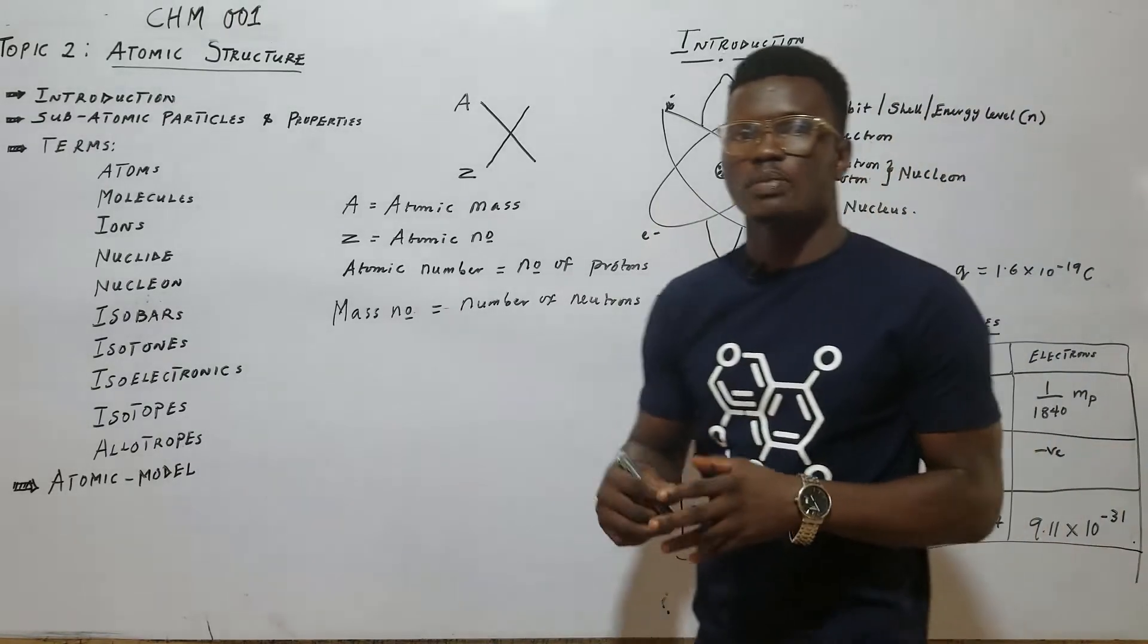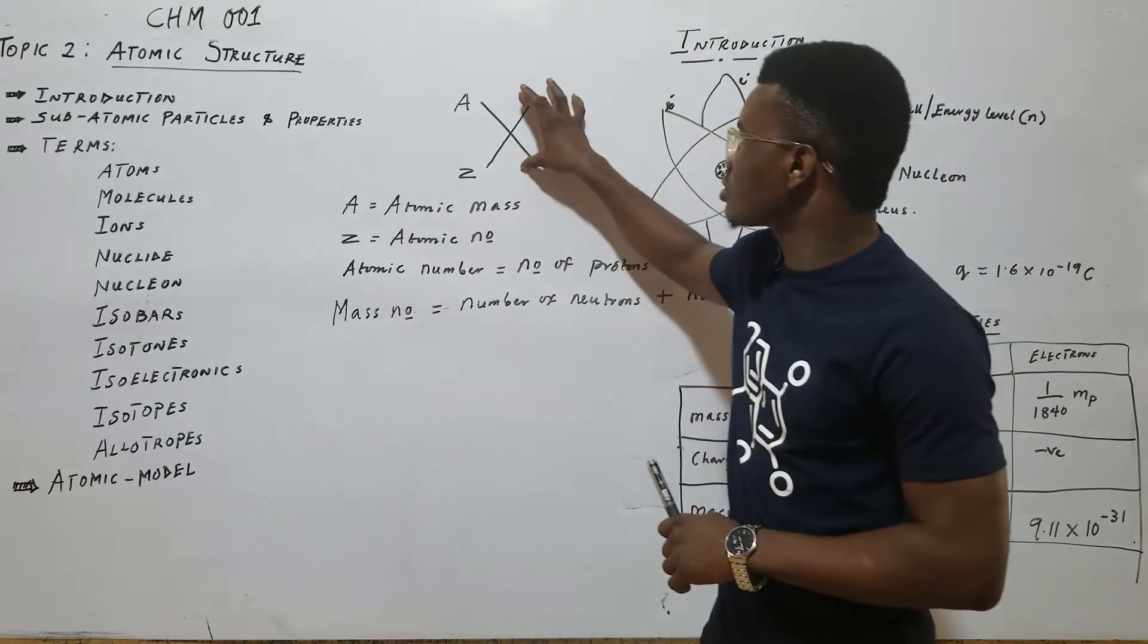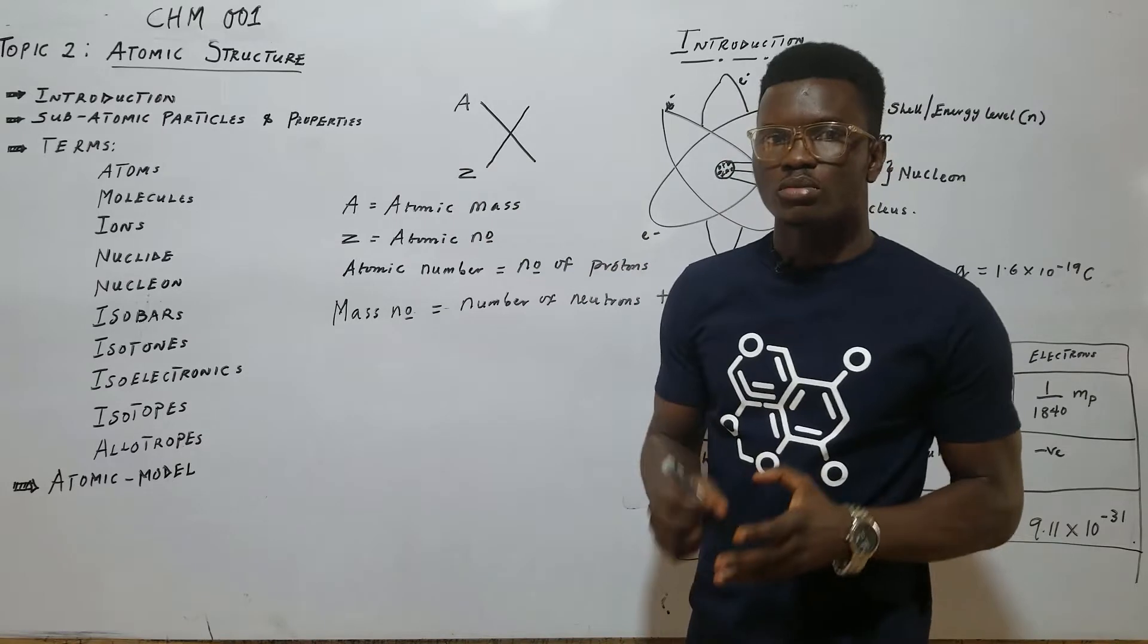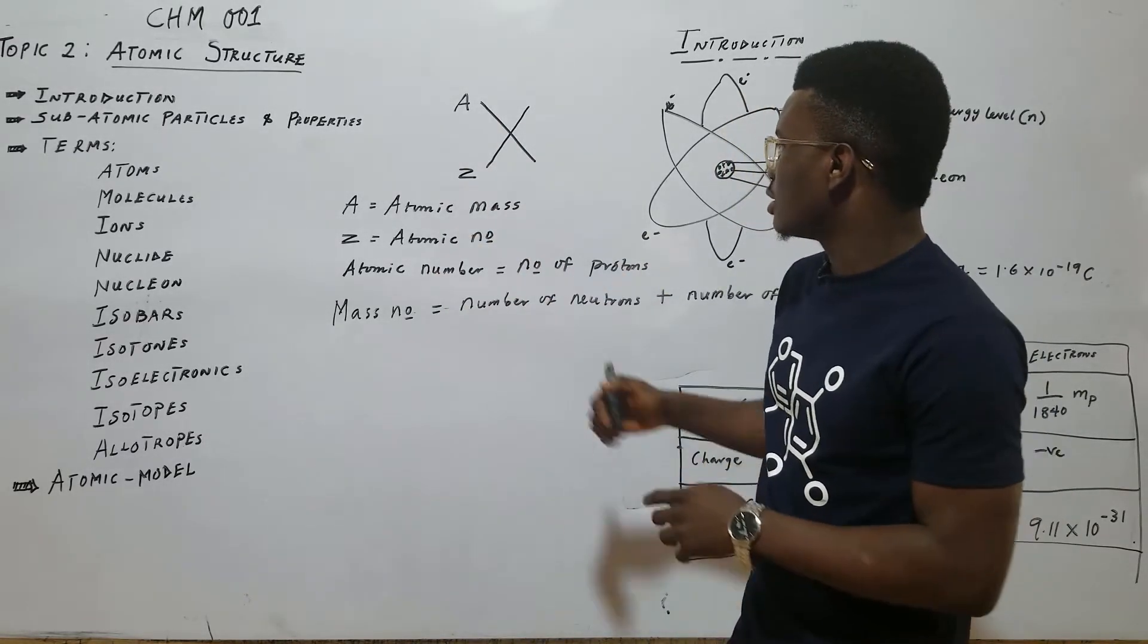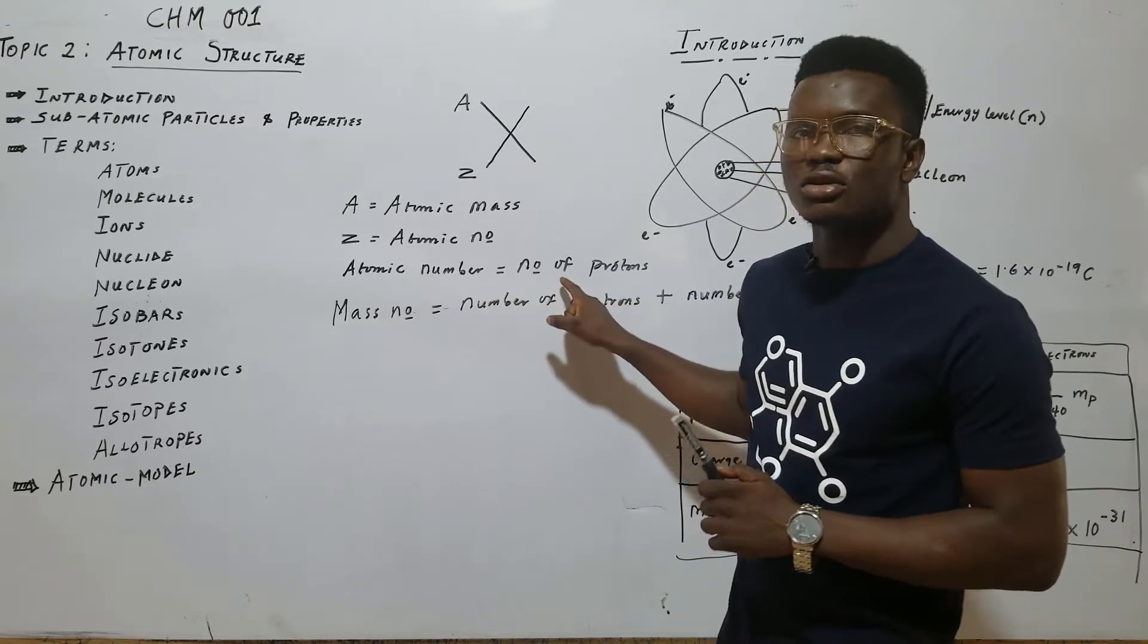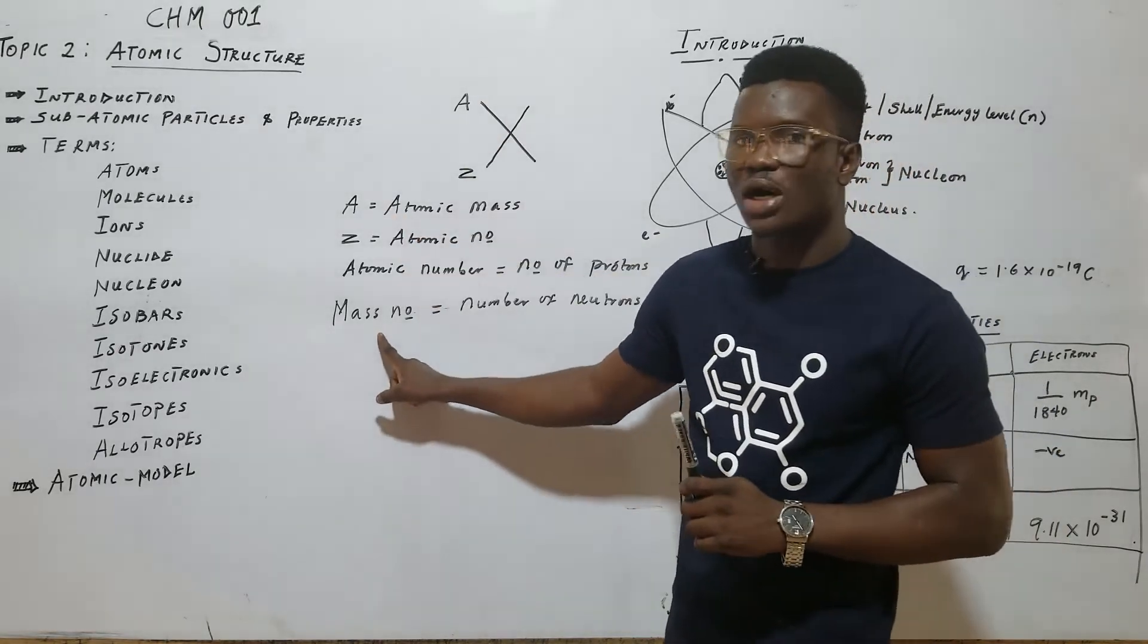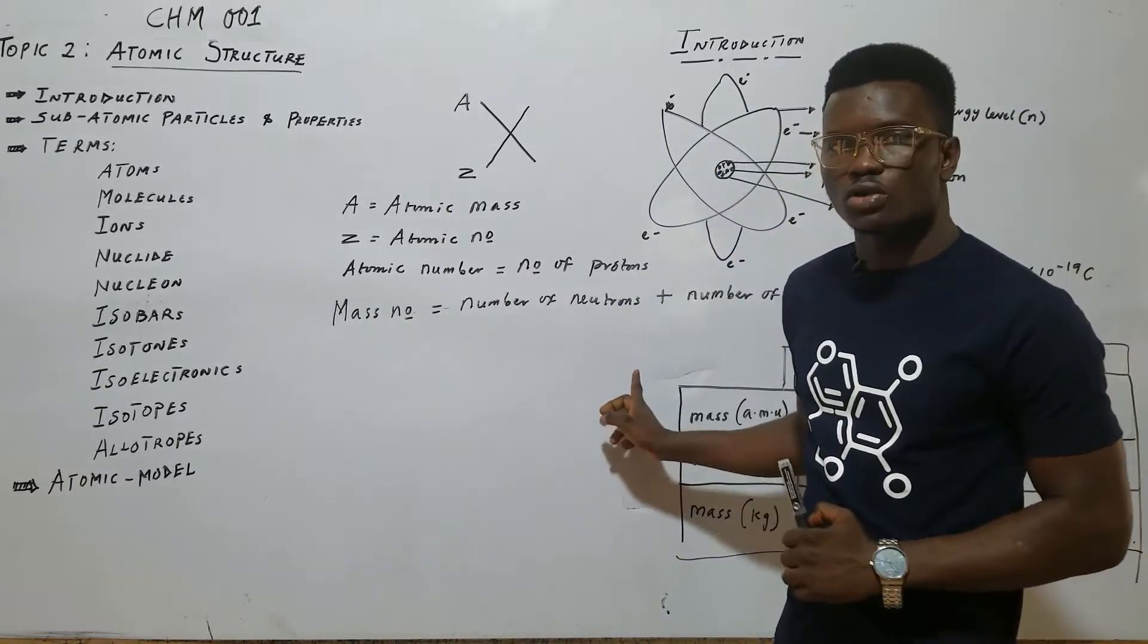When you want to represent your atom, this is the way to represent atom. The X represents the atom. A is the atomic mass. Z is the atomic number. The atomic mass is also known as the mass number. The atomic number is the number of protons. The mass number will give you the number of protons plus the number of neutrons.